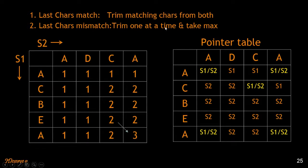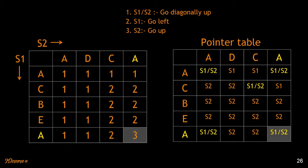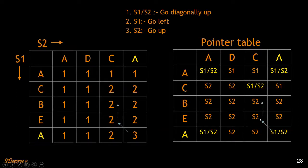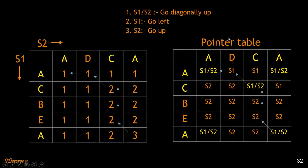We want to print out the subsequence — this is where the pointer table comes handy. We follow three rules: if the pointer table contains S1/S2, we go diagonally up; if it contains S1, we go left; if it contains S2, we go up. Also, whenever the cell contains S1/S2, we store the matching character into the LCS string buffer. Since here we have S2, we go up. Again S2, we go up. Since there is S1/S2, we store C and go diagonally up. Since this is S1, we go left and store A. We have ACA but in reverse order, so we reverse the string at the end.